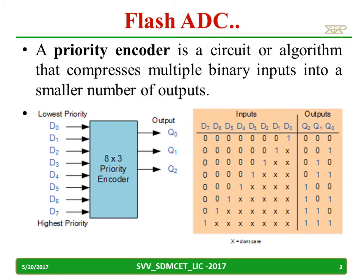The priority encoder used in the Flash ADC is a circuit that compresses multiple binary inputs into a smaller number of outputs. Let us take an 8-by-3 priority encoder: D0 to D7 are inputs, Q0 to Q2 are outputs. When only D1 is high and the remaining are 0, you will get a 0, 0, 0 output.